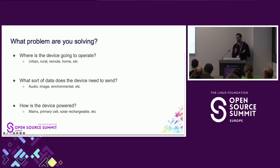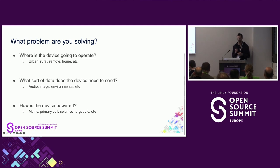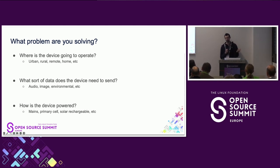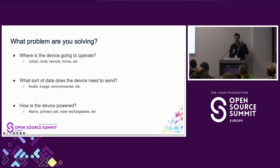But if it's just operating in a home context, pure Wi-Fi might make perfect sense. The second question is: what sort of data is the device sending? Is it an audio stream, images, or just a temperature sensor reading every 10 minutes? Very different orders of magnitude in how much data you need. The third question is: how is the device powered? If you can plug it into the wall, you have essentially infinite energy. But if it's a primary cell battery like a coin cell, that limits your choices. Solar rechargeable gives you more options, but probably not a permanent LTE or satellite uplink.